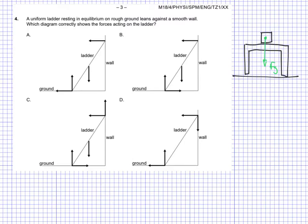If we ask what forces are acting on the box, we say yes, there's the force of gravity. Using that same analogy here with the four ladder drawings: assuming we're on planet Earth, the force of gravity should be acting on the ladder. The only diagram that does not show this is D, so I can eliminate D at this point.